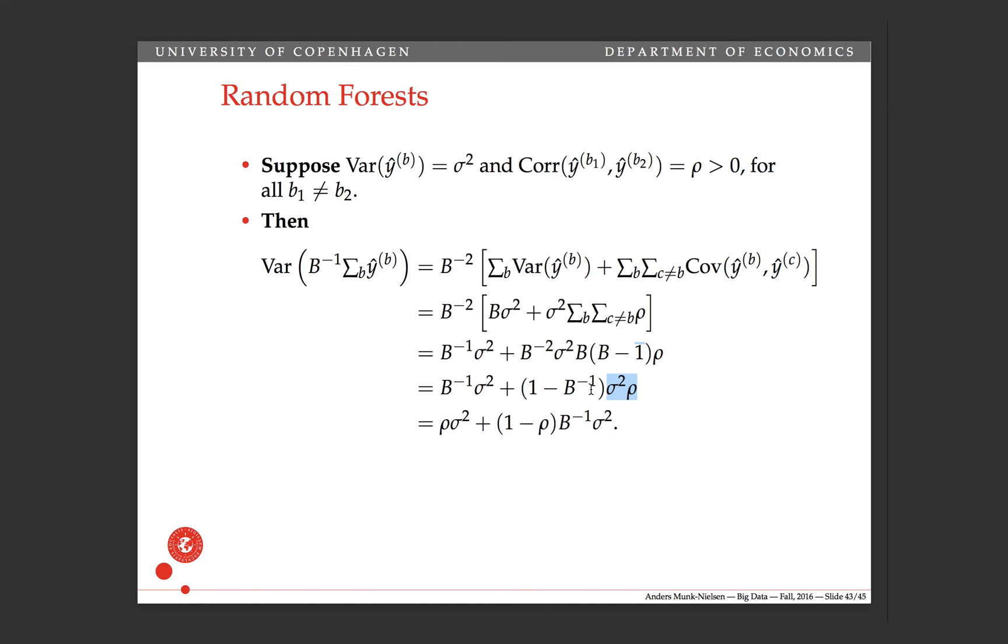And then we can rewrite this as 1 times sigma squared rho. Get that outside. And then we have b to the minus first and b to the minus first. And we have sigma squared and sigma squared. So we take that outside of the parenthesis. And then there's a 1 in front of this, and there's a rho in front of that term. And then we have this final term.